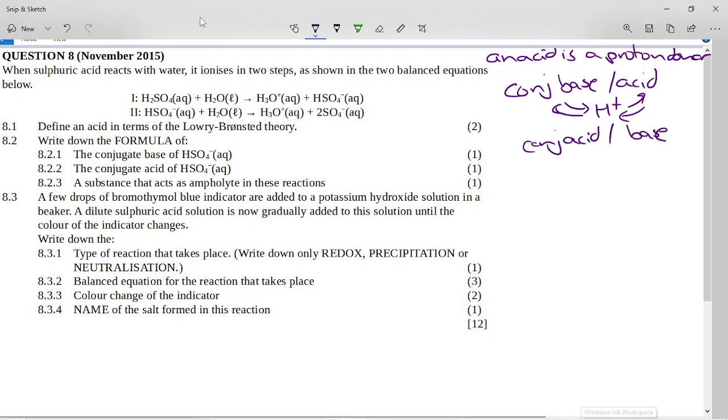Okay, so if we are looking here, a conjugate base is if HSO4 acts as an acid. So if we take a proton off HSO4 minus we will end up with the sulfate ion SO4 2-.